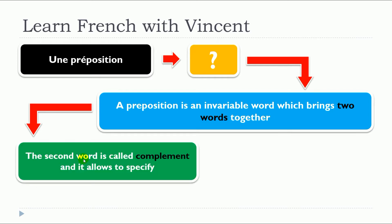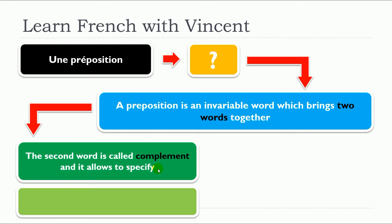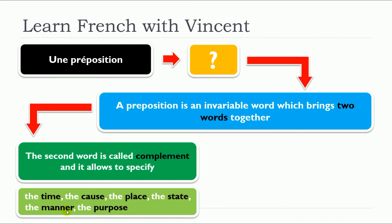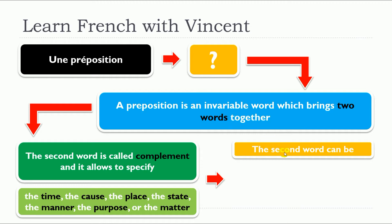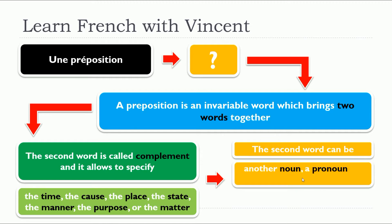The second word is called complement, and it allows to specify the time, the cause, the place, the state, the manner, the purpose, or the matter. The second word can be another noun, a pronoun, an infinitive verb, or an adverb.